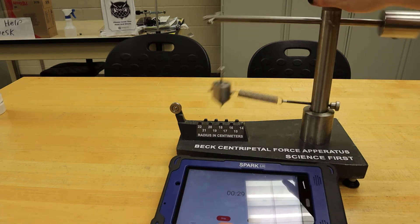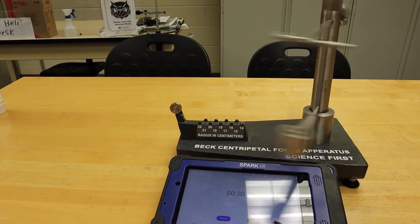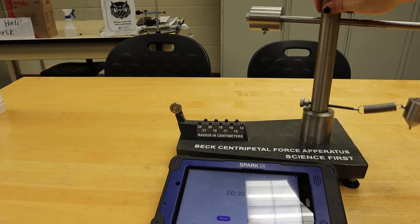Once we have 30 oscillations, we will press stop on the timer and then slow down the apparatus.